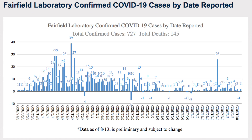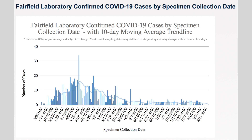Because of these discrepancies that happen, we did start looking at the date when people were tested — the specimen collection date. This actually gives a better snapshot of what's going on in the community. This is when people were tested for COVID-19, theoretically when they were most contagious. So this is probably the better graph to look at.